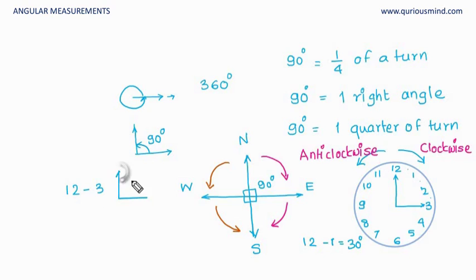I was looking here, I moved from here to here, I have traversed 90 degrees, and that's called a right angle. Now further, from 3 to 6 I move, which means I have moved another 90 degrees. So from 12 to 6,